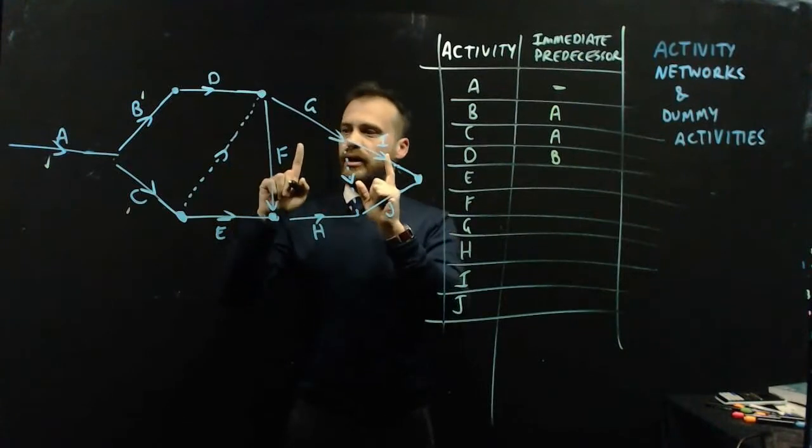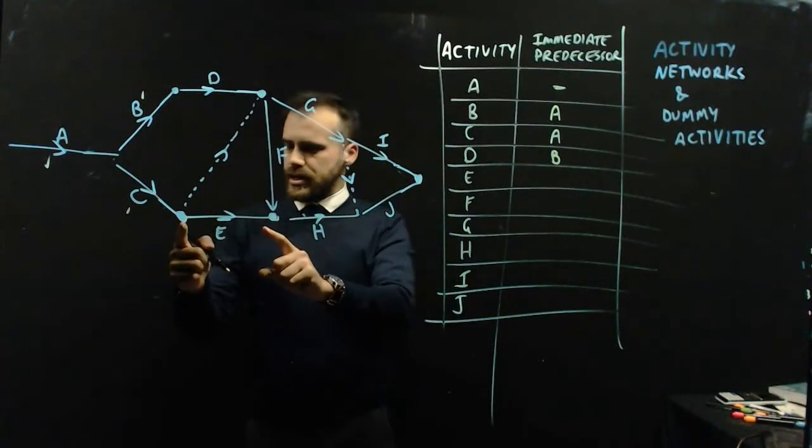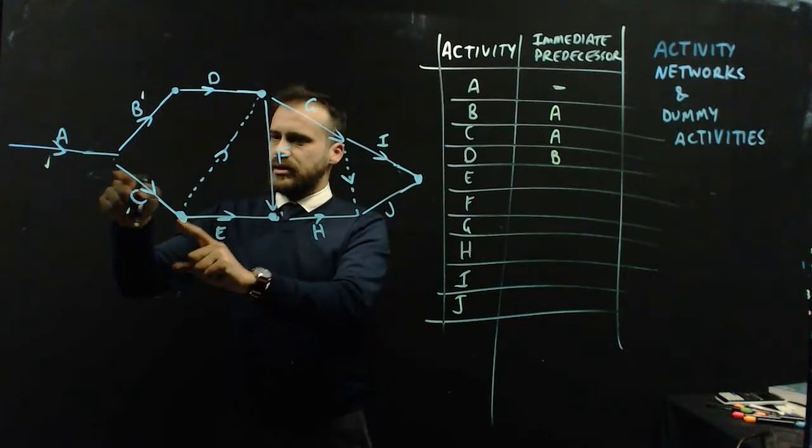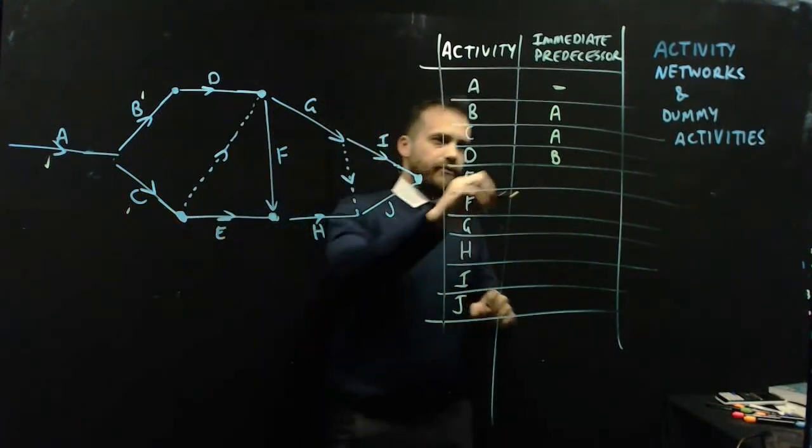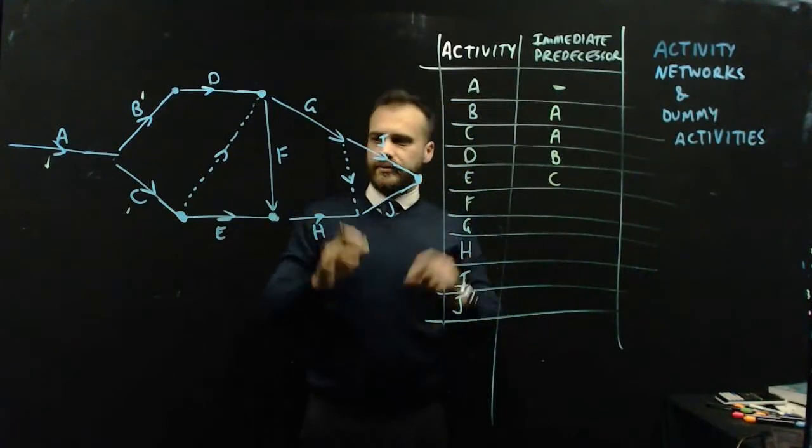Let's do this one. E has an immediate predecessor of C. We're getting dangerously close to that dotted line which is what this video is all about. But for now, we're easy. Easy done.